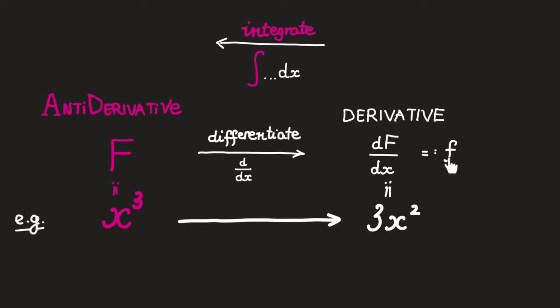Then, as you know, we call this little f, we call this 3x squared, the derivative of this big F. For example, here we say that 3x squared is the derivative of x cubed.